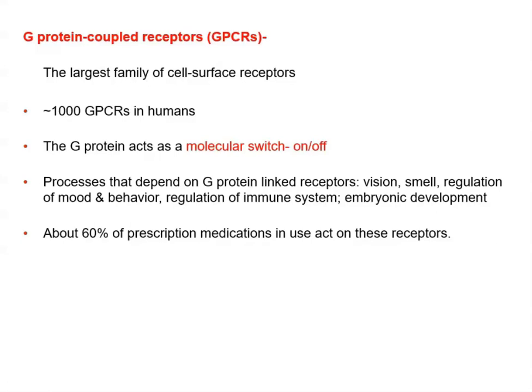These types of receptors make up the largest family of cell surface receptors, and there are about a thousand known in humans. They play a huge role in all sorts of processes happening within our cells and tissues. A few examples include vision and smell, regulation of mood and behavior, regulation of the immune system, and embryonic development — and this is just to name a few.